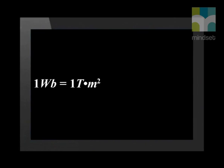The SI unit of magnetic flux is the Weber with the symbol WB. One Weber is equal to one Tesla times meters squared.